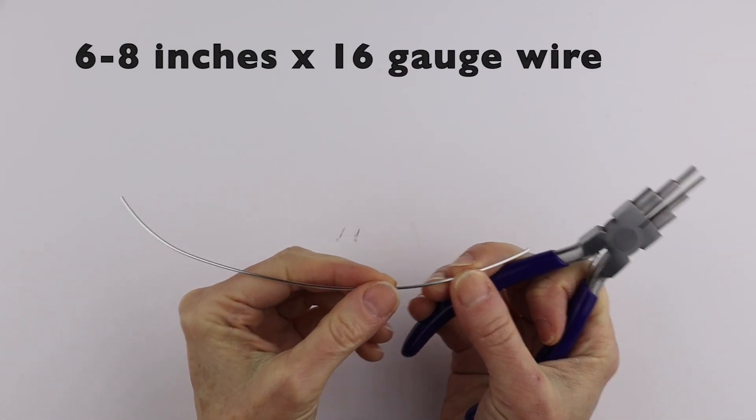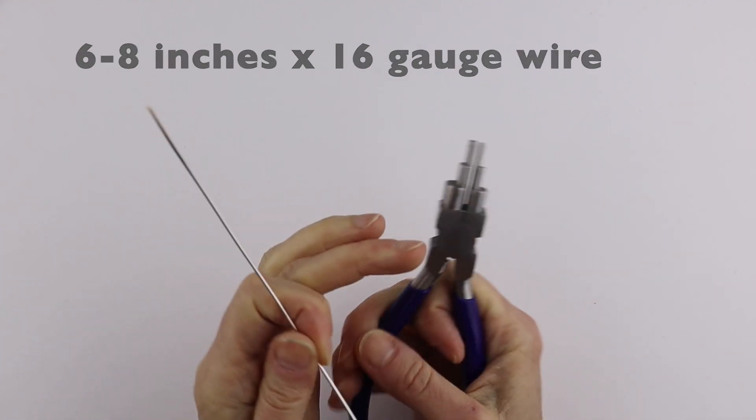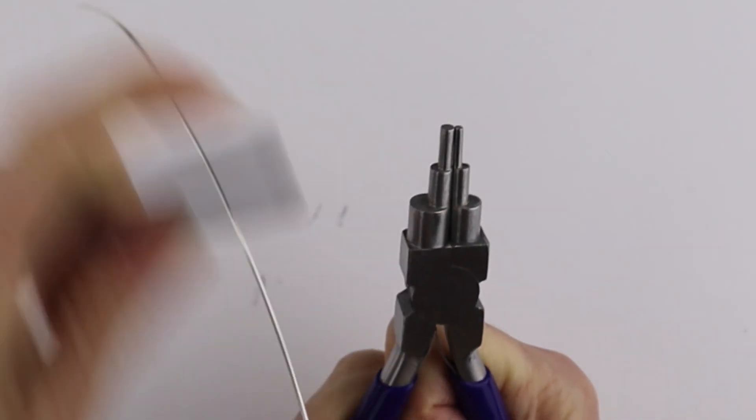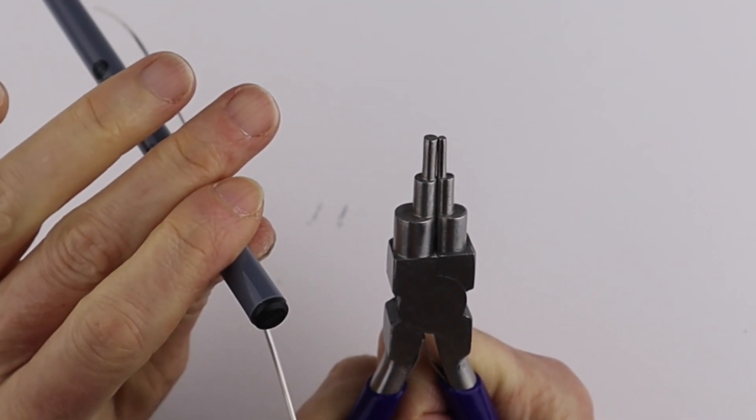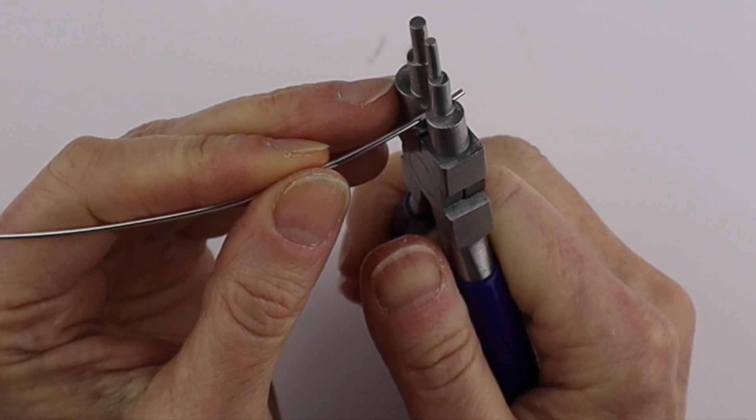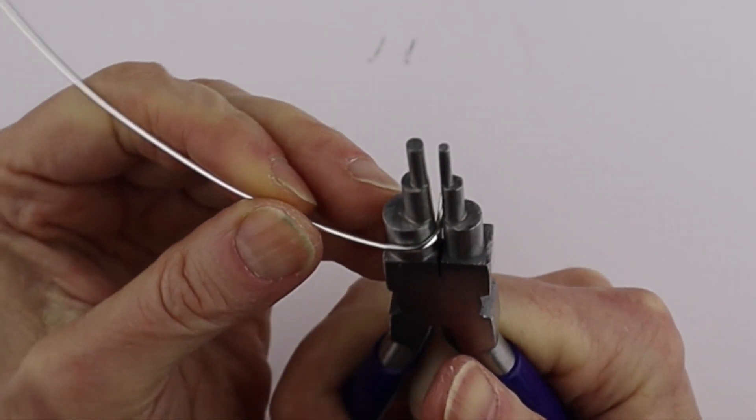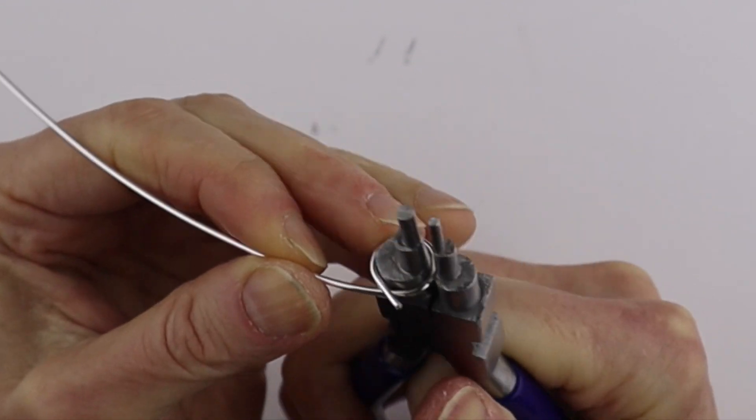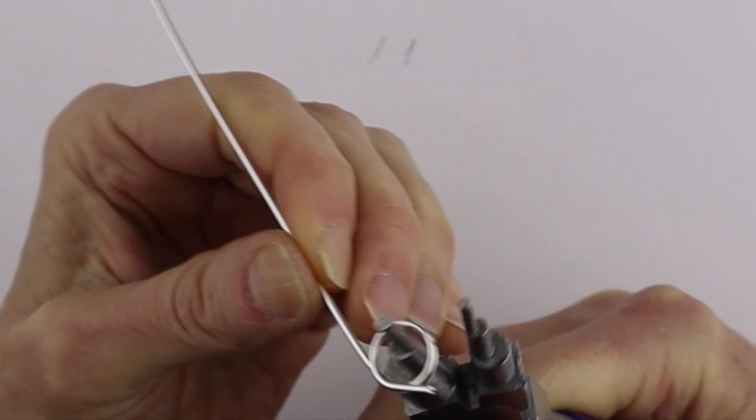So I'm going to start with a 6 to 8 inch piece of the 16 gauge wire. I'm going to use the largest loop on my looping pliers. If you don't have these looping pliers, use the end of a pen. So I'm just going to start by forming the loop. We're just going to bring it around all the way around.